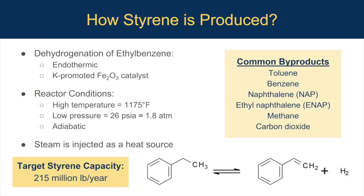Our plant will manufacture styrene by dehydrogenation of ethyl benzene with a potassium-promoted ferric oxide catalyst. This is an endothermic gas reaction where the moles increase from reactant to product. Therefore, from Le Chatelier's principle, the reaction is more favorable at low pressures to shift the reaction to products. High temperatures are required to provide the necessary thermal energy to overcome activation energy. Steam is injected as a heat source and also lowers partial pressures to push the reaction towards products. It will also clean the catalyst bed to prevent coking and side reactions. Our byproducts are benzene, toluene, CO2, methane, ethyl naphthalene, and naphthalene.